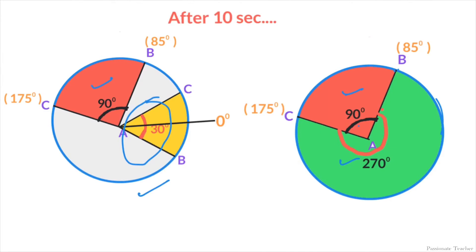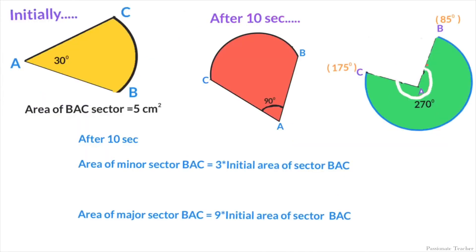The angle between B and C in the major sector will be 270 degrees. Initially, the area of sector BAC formed by 30 degrees is equal to 5 centimeters squared. After 10 seconds, the minor sector area is formed at an angle of 90 degrees, and the major sector is formed at an angle of 270 degrees.